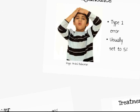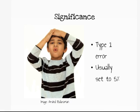Number 2 is the significance, which is the type 1 error. We want this to be small, and the standard is 5%, meaning a 5% chance of wrongly finding a difference that does not exist.